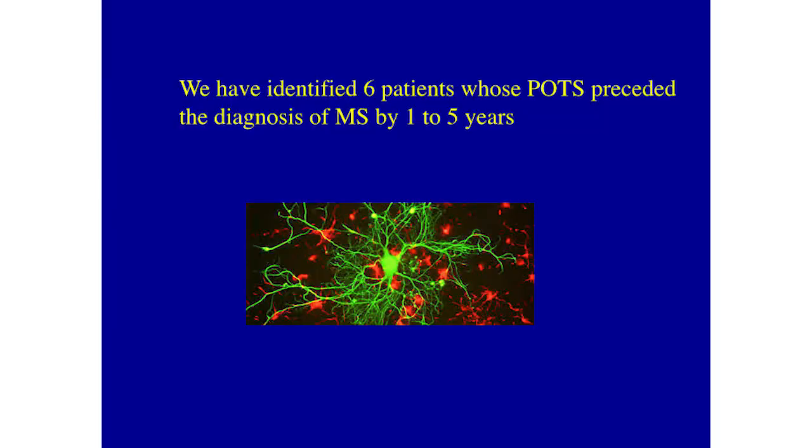That makes sense because the plaquing effects that occur in the brain can be anywhere in the brain. MS is called the great imitator — wherever it begins, that's what you get. If it begins in the visual centers you get visual problems, motor centers give motor problems, emotional centers give emotional problems — and it can occur within the brain stem area. We identified at least six patients whose POTS diagnosis preceded their MS diagnosis by anywhere from one to five years.